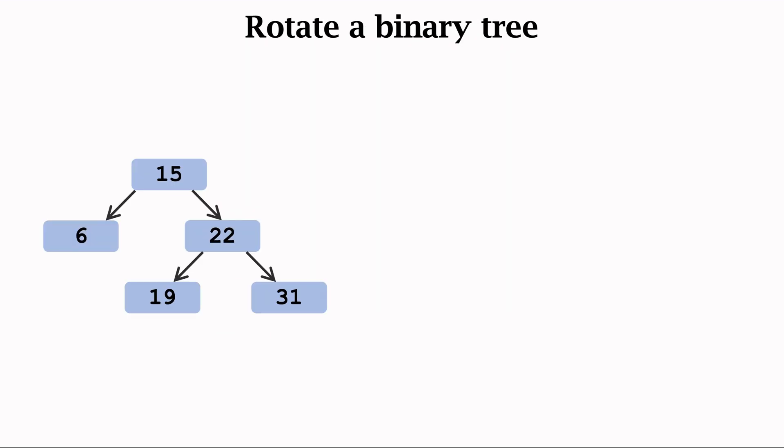I'd like to explain the rotation operation to help you understand binary tree. Rotation means for each vertex, swap its left and right children. After the rotation, we obtain this tree. It is like looking at the original tree in the mirror.